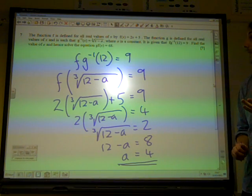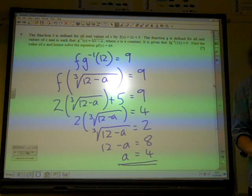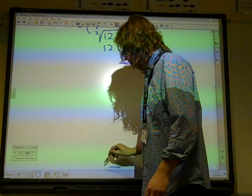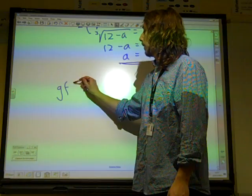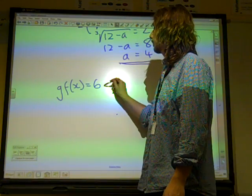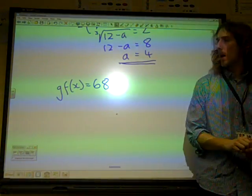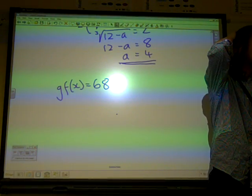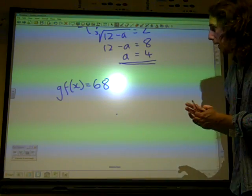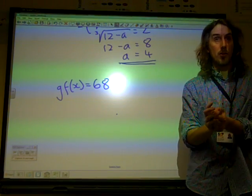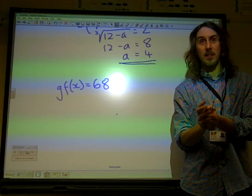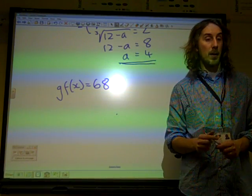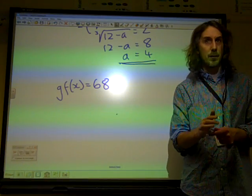And hence solve the equation g(f(x)) = 68. Let's think where that's going to lead us now. And I reckon we've got a couple of choices for this. The first choice that we've got is that we could find the function g. And that might be a sensible thing to do. If we could find the function g, we could then go back and find g(f(x)). But I'm not sure that we have to do that.